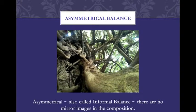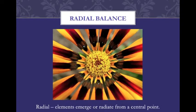Asymmetrical balance, also called informal balance, has no mirror images in the composition. Radial balance is where elements emerge or radiate from a central point.